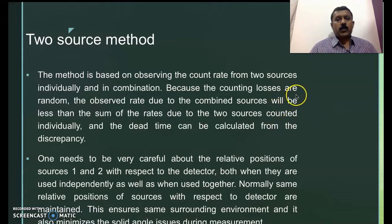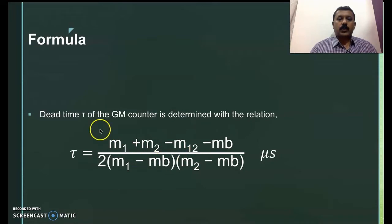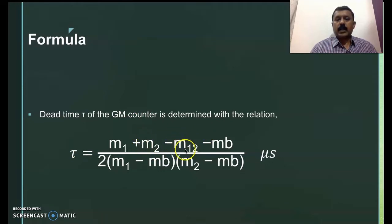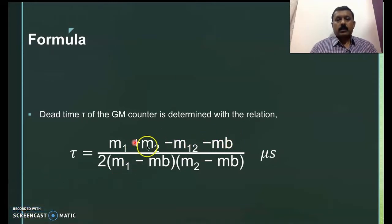We place source 1 first and take the count. We then place the second source and take the count. Then we place both sources together and measure the counts. Care has to be taken about the relative positions of source 1 and 2 with respect to the detector. The formula used to determine dead time tau involves M1 (count rate with source 1 only), M2 (count rate with source 2 only), M12 (count rate with both sources), and Mb (background count). Tau is generally expressed in microseconds.